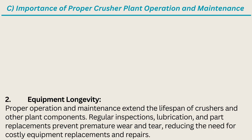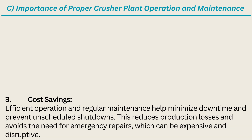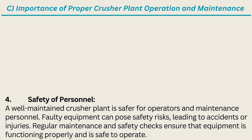2. Equipment Longevity. Proper operation and maintenance extend the lifespan of crushers and other plant components. Regular inspections, lubrication, and part replacements prevent premature wear and tear, reducing the need for costly equipment replacements and repairs. 3. Cost Savings. Efficient operation and regular maintenance help minimize downtime and prevent unscheduled shutdowns, reducing production losses and avoiding the need for emergency repairs, which can be expensive and disruptive. 4. Safety of Personnel. A well-maintained crusher plant is safer for operators and maintenance personnel. Faulty equipment can pose safety risks, leading to accidents or injuries. Regular maintenance and safety checks ensure that equipment is functioning properly and is safe to operate.